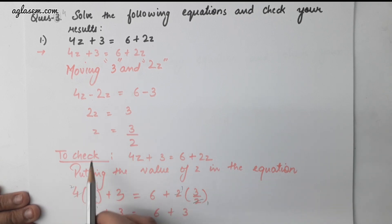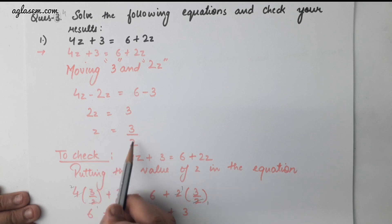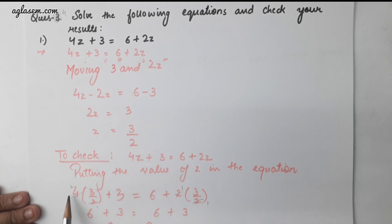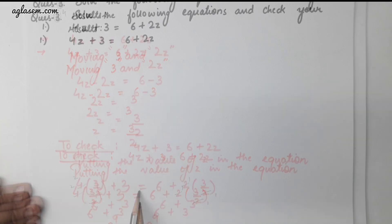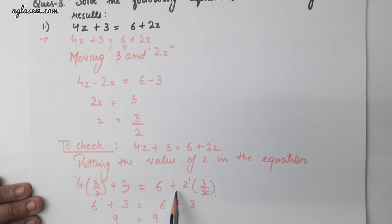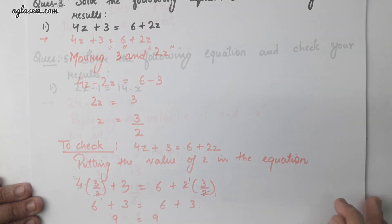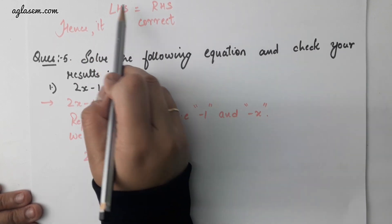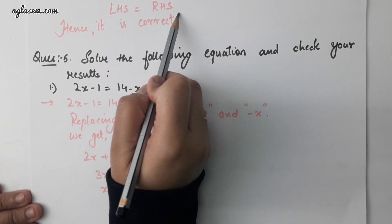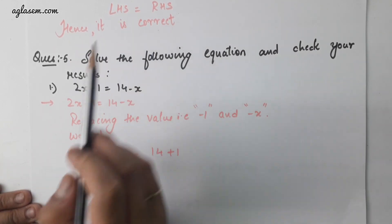To check, we will put z equals to 3 by 2 in the given equation. We get 4 multiplied by 3 by 2 plus 3 equals to 6 plus 2 multiplied by 3 by 2. So 6 plus 3 is equal to 6 plus 3, giving 9 is equal to 9. Therefore, LHS is equal to RHS. Hence it is correct.